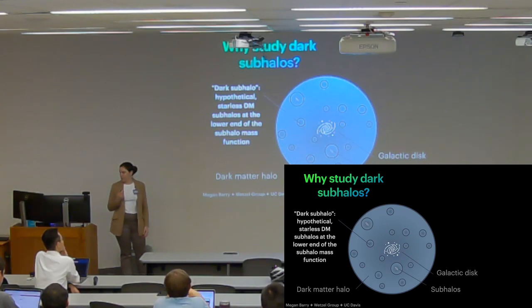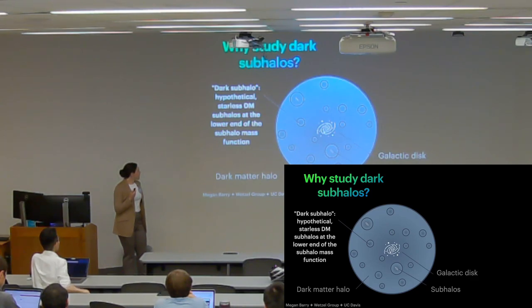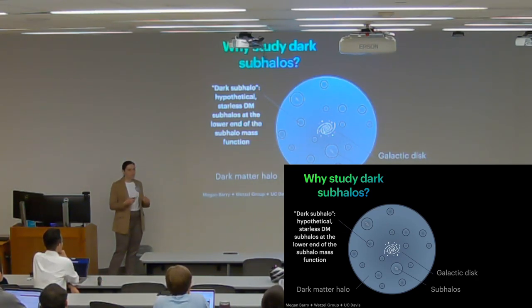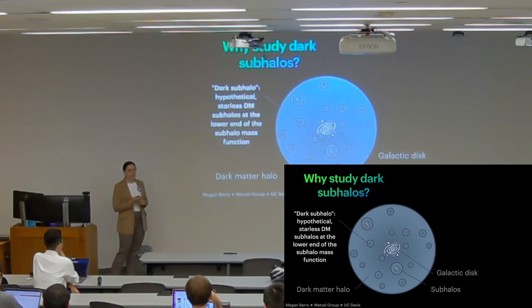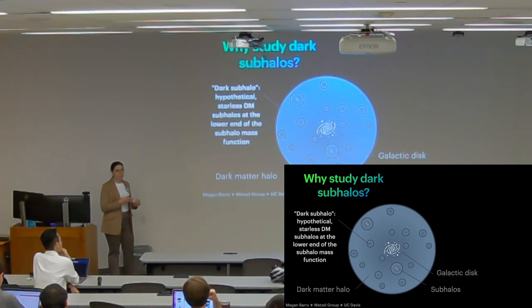But several dark matter models do predict the existence of even smaller, lower mass subhalos. So when I say dark subhalo, what I mean is these very low mass, below 10 to the 8 solar mass subhalos that have not yet been detected. So these are hypothetical objects at the lower than the known end of the subhalo mass function.